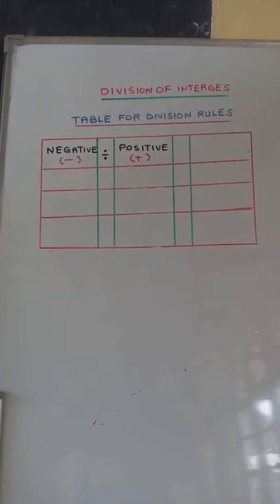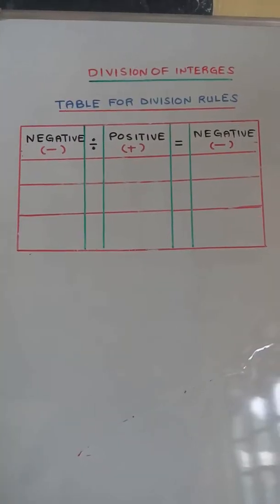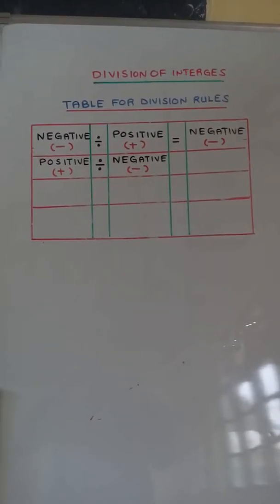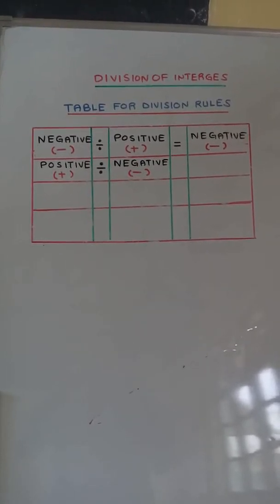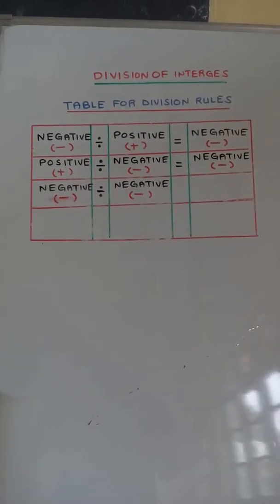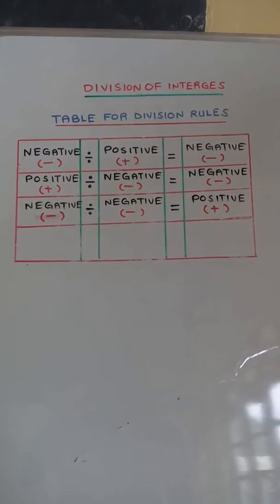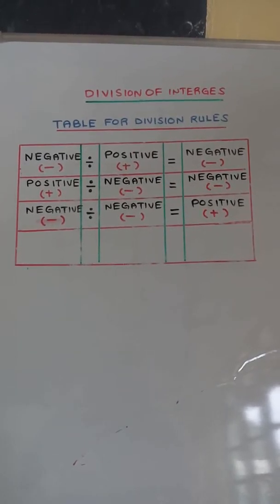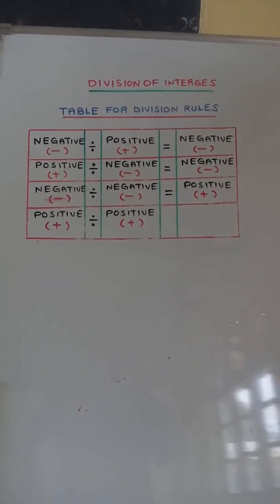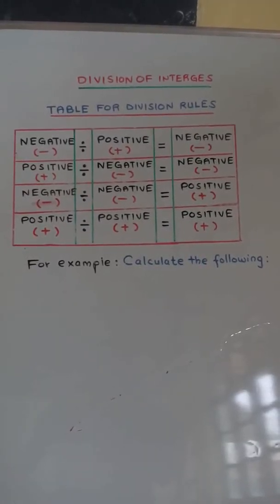Negative divided by positive is equal to negative. Positive divided by negative is equal to negative. Negative divided by negative is equal to positive. Positive divided by positive is equal to positive.